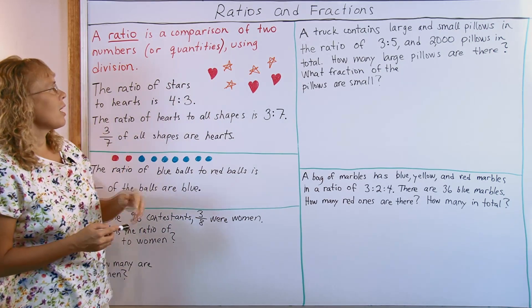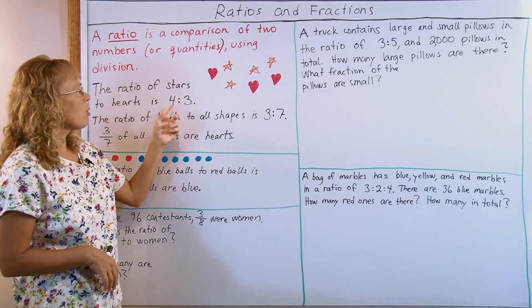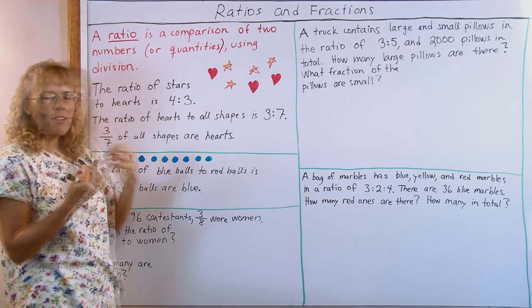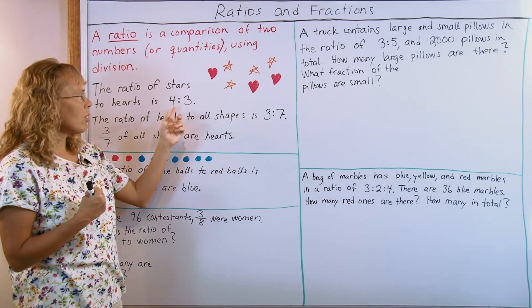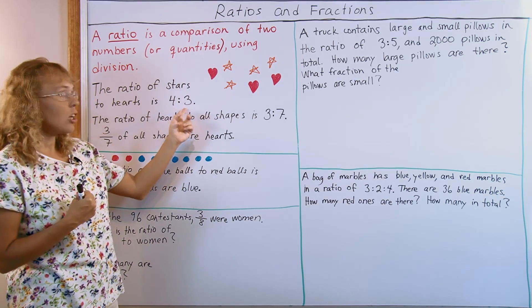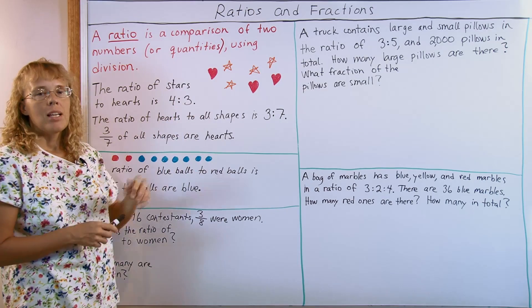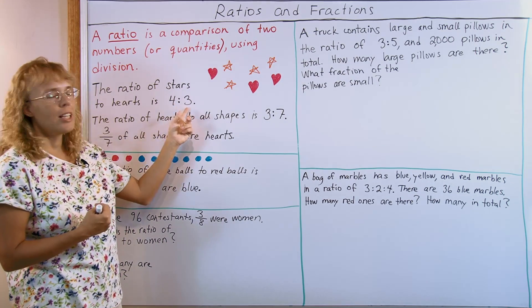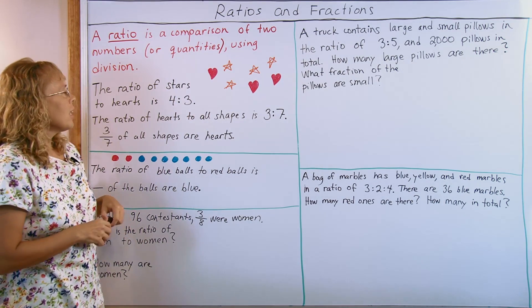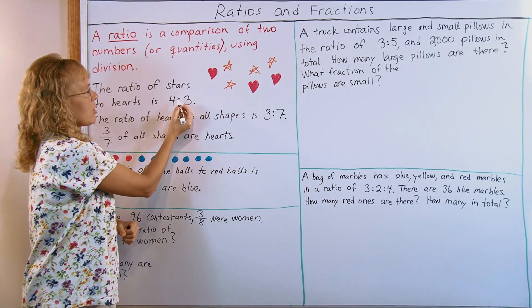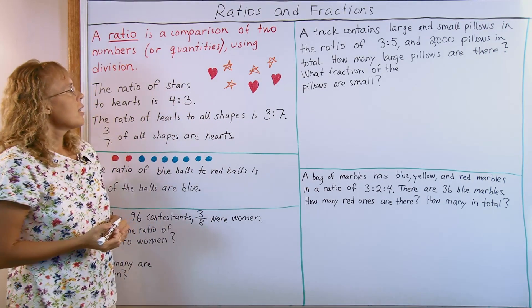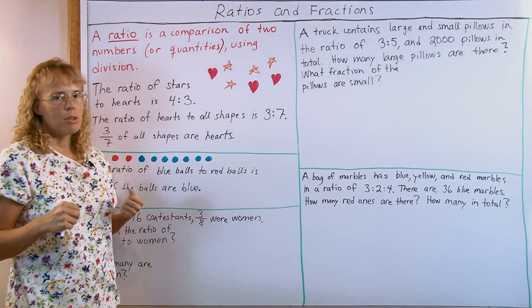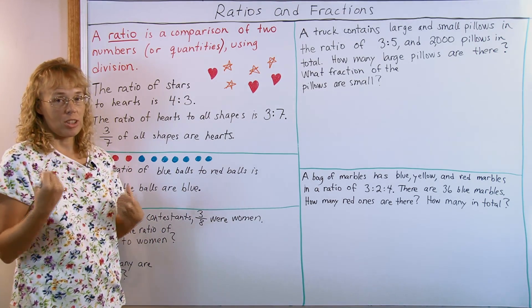An example will explain it better. For example, here in this picture we have the ratio of stars to hearts is 4 to 3, because we have 4 stars and 3 hearts. And we read a ratio using the word to: 4 to 3. This is the most common way of writing it using a colon. It's also written using just the word to. You could see 4 to 3, or you could see a fraction line. And it reminds you of division symbol, because division symbol is almost the same thing. And ratios behave just like divisions.